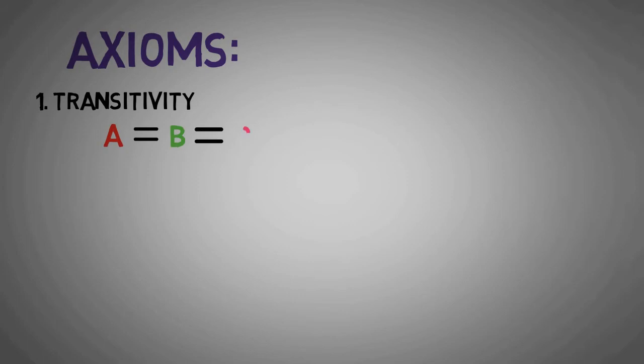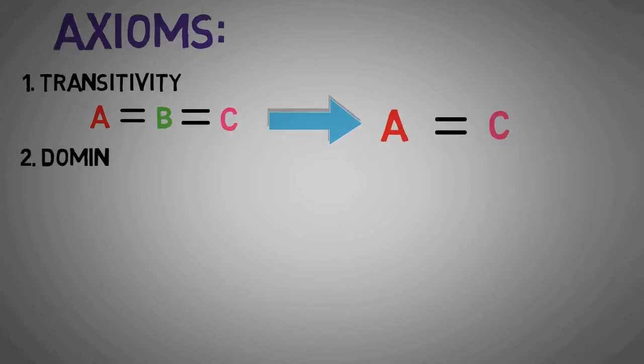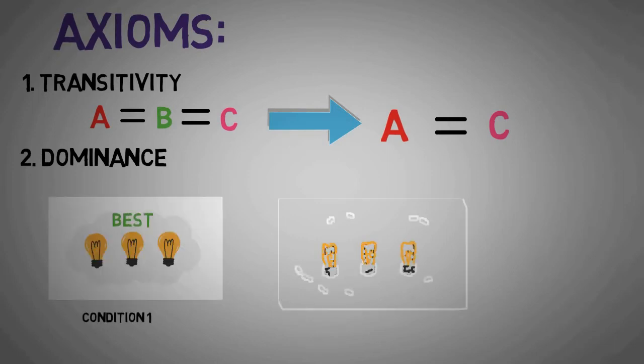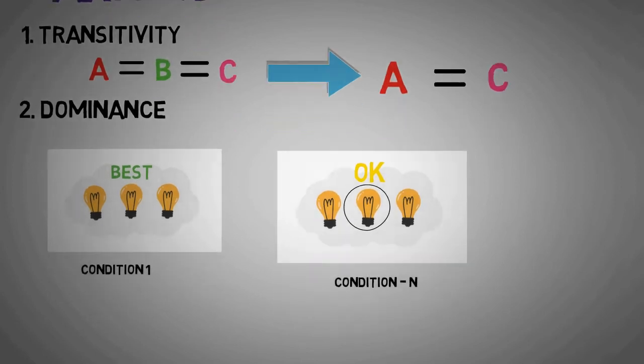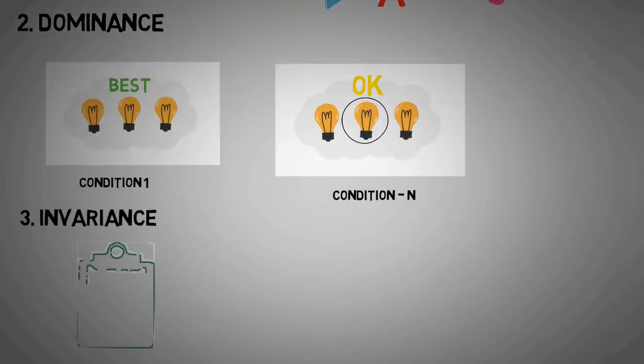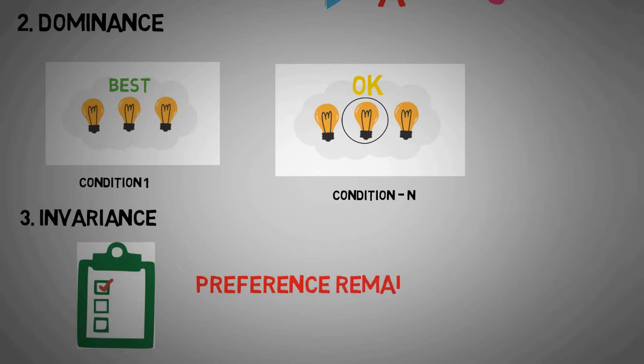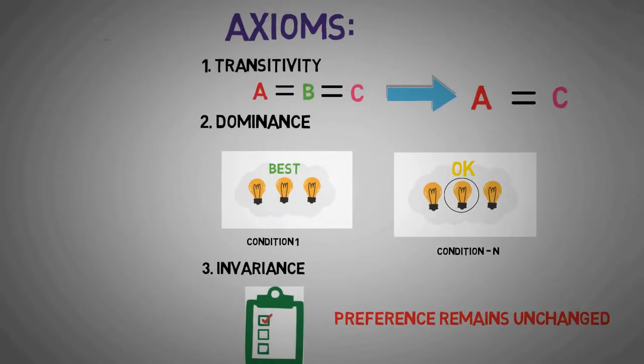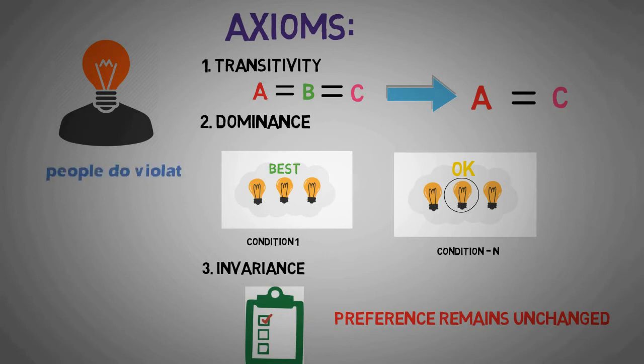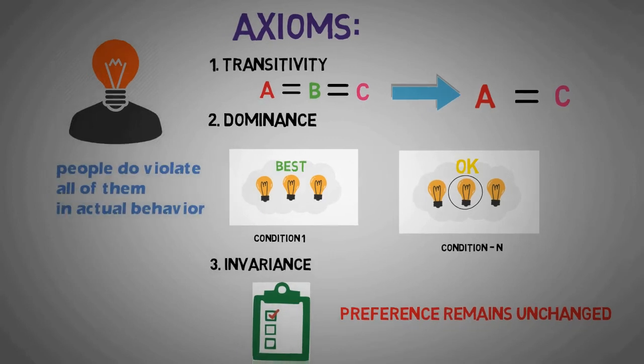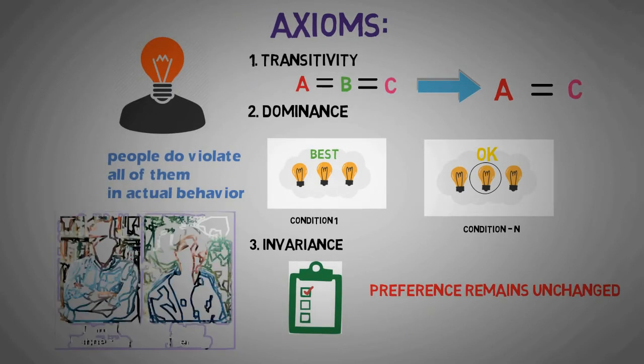These axioms are: transitivity - that if A is equal to B and B is equal to C, then automatically A is equal to C; dominance - if one option is better in one aspect and good in all others, it would be preferred to others; invariance axiom - preference remains unchanged regardless of order or method of presentation. All these axioms are relevant to all rational decision-making models. They are logically correct but people do violate all of them in actual behavior.